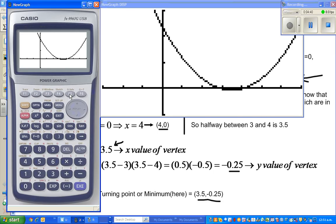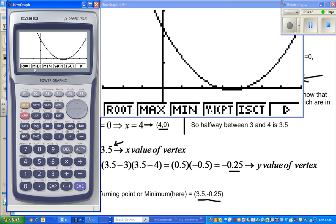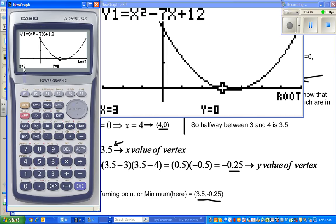You press F5 and to find the root, which is the x-intercept—the root and x-intercept are the same—press F1. So this is the first root: (3,0). If you press this, the cursor will move to the next root. So this is the next root, which is (4,0).